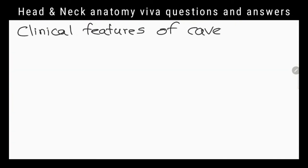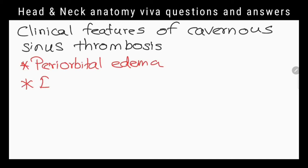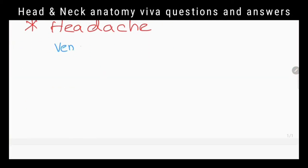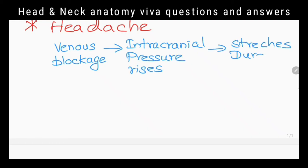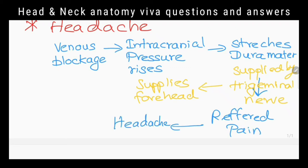What are the other clinical features of cavernous sinus thrombosis? Headache, periorbital edema, and exophthalmos. Why does headache occur? Intracranial pressure increases due to venous blockage. This stretches the dura mater, which is supplied by the trigeminal nerve. The trigeminal nerve also supplies the forehead, so referred pain from the forehead is felt as a headache.